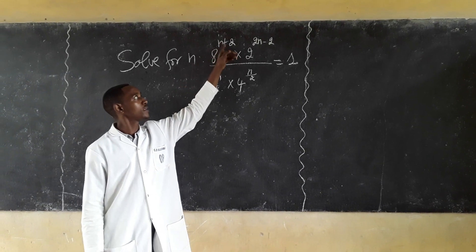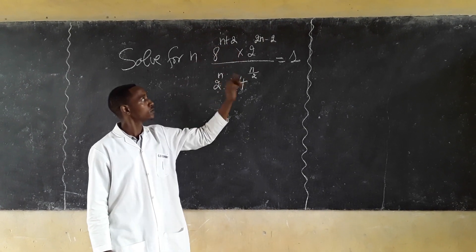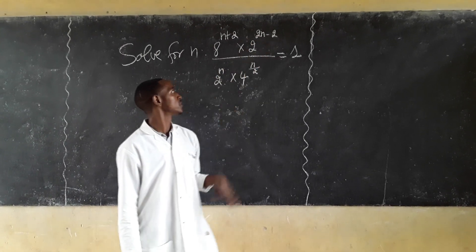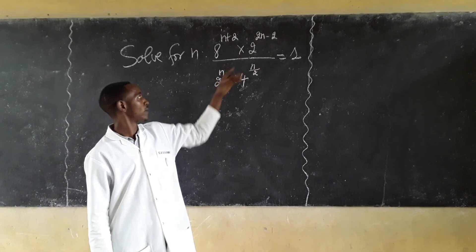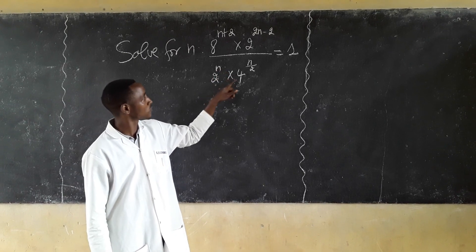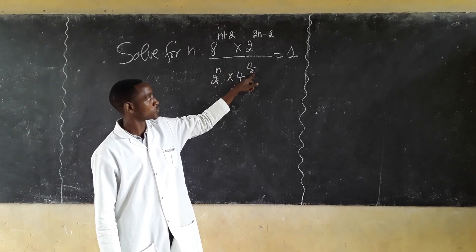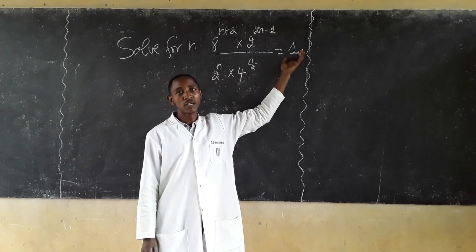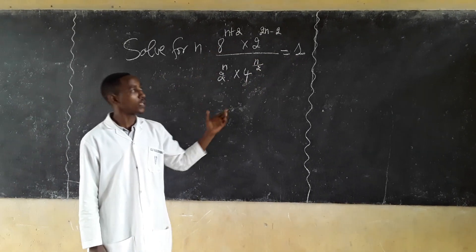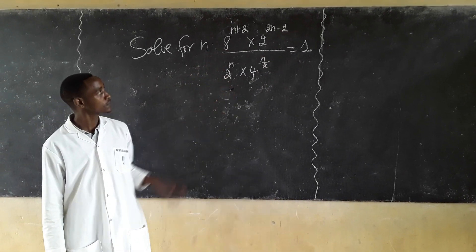8 power n plus 2 times 2 power 2n minus 2, divided by 2 power n times 2 power n over 2, is equal to 1. So this is the exponential equation. How do we solve this exponential equation?